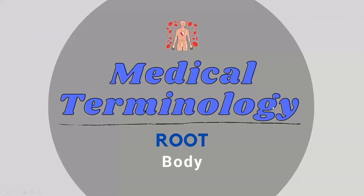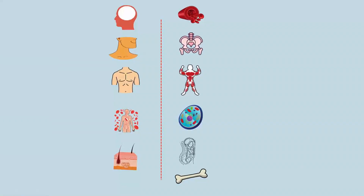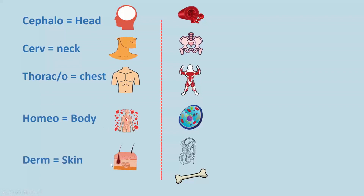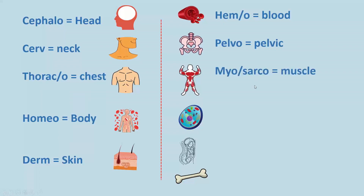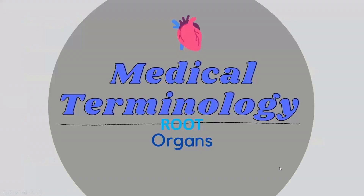Now let's start with some important roots used for the human body. Cephalo is head. Cerv or cervical is neck. Thoraco or thoracic is chest. Homeo is body. Derm is skin. Hemo is blood. Pelvo is pelvic. Myo or sarco is muscle. Cyto is cell. Peritone is peritoneum. Osteo is bone.